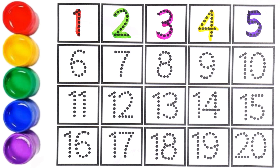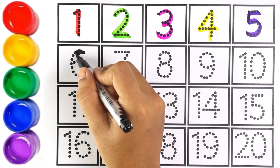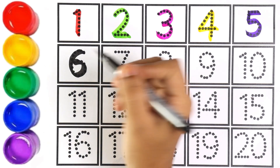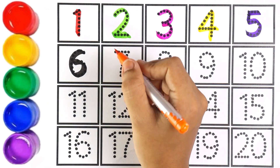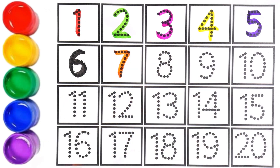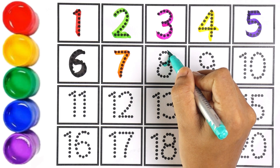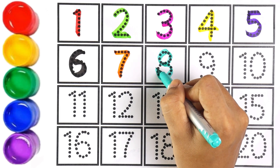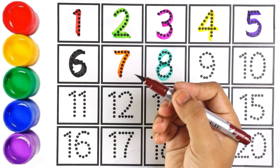Let's move on to the next number. I'm using black color to write number six. Which number is this, kids? Number six! Orange color — number seven. Which number is this? Number seven! Light blue color — number eight.